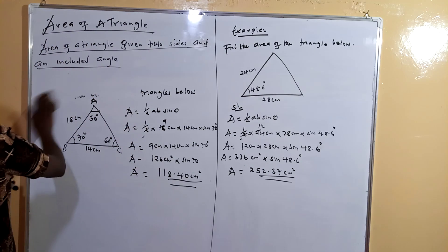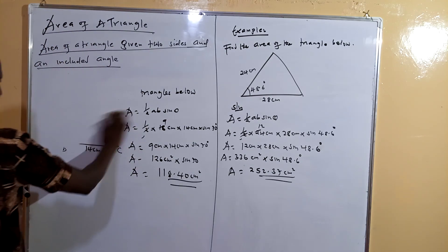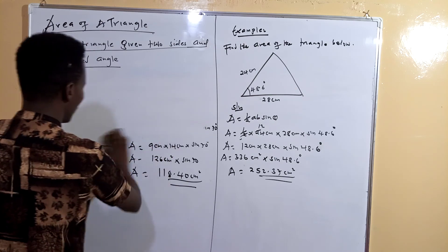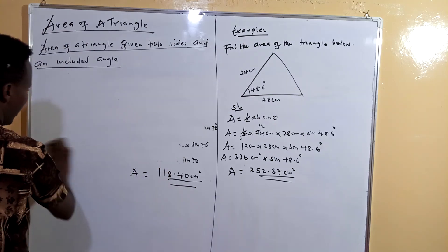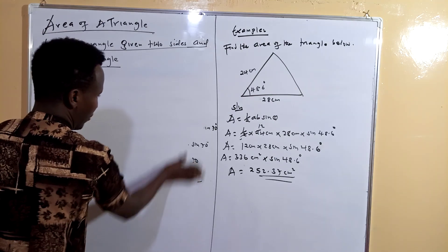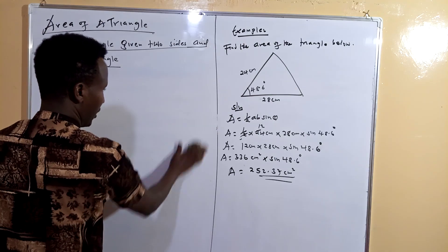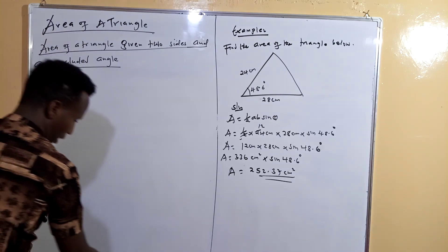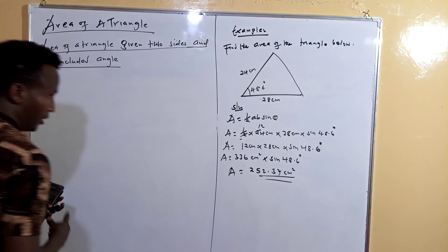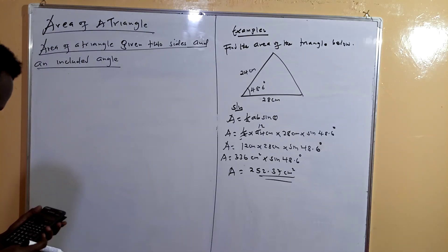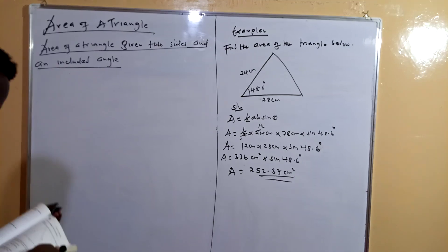We can still go ahead and see more examples. Let's look at a situation where we have the area and we are told to find a dimension or the angle theta — the angle which is sine theta. Let's see this next example.